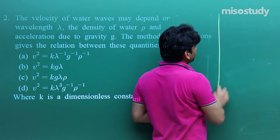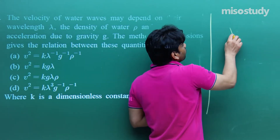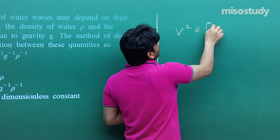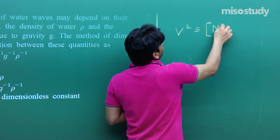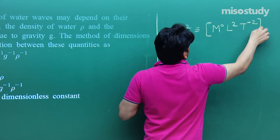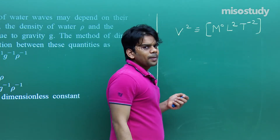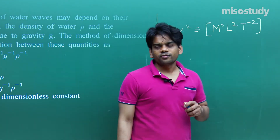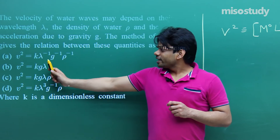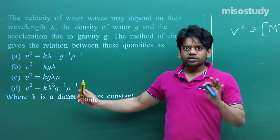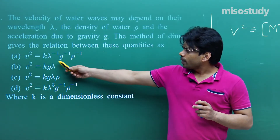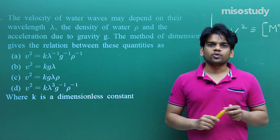For such questions, we need to know the dimensional formula for v² on the left-hand side and match it with the right-hand side. If an equation is valid, it must be dimensionally correct. The dimensional formula for v² is M⁰L²T⁻². Now, which right-hand-side term matches this?